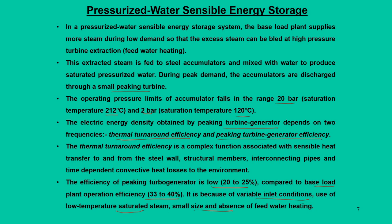Our main analysis focuses on charging and discharging steam, which is characterized by thermal turnaround efficiency. Thermal turnaround efficiency is a complex function associated with sensible heat transfer to and from the steel wall — the container that stores the steam. The rate of heat loss from the steam and the wall material must be minimized. The main parameter affecting thermal turnaround efficiency is the time-dependent convective heat loss.